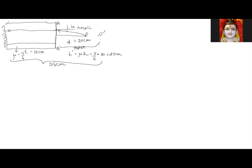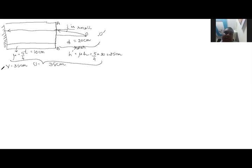Since it is a plane mirror, the object distance equals the image distance. The image will appear at a distance of 35 centimeters on the other side of the mirror.